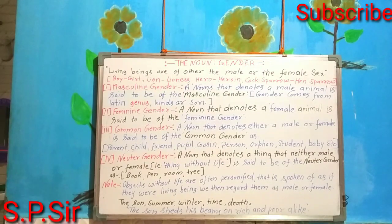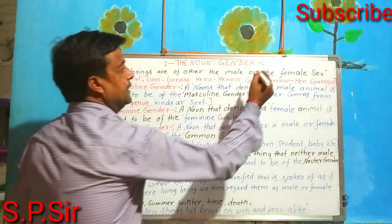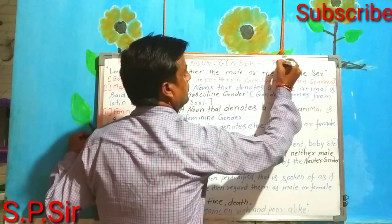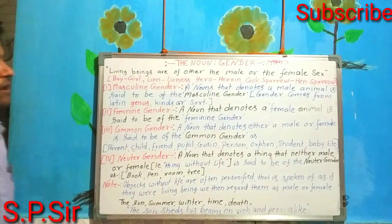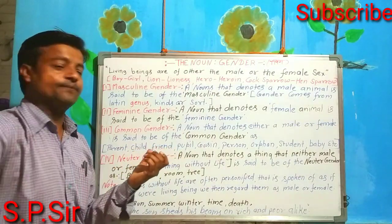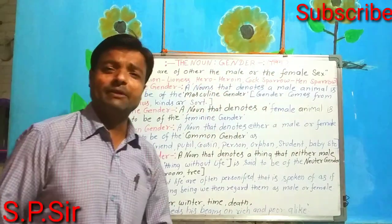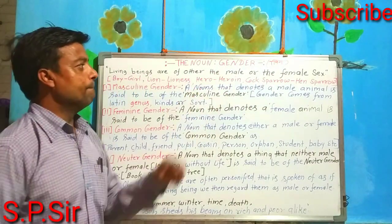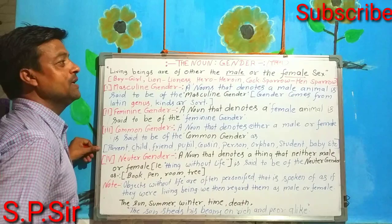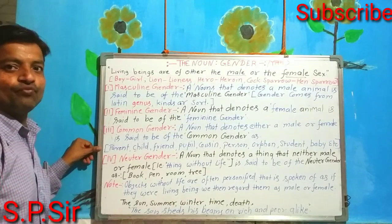Let's start. Gender — what is gender? The definition: gender denotes things of either the male or the female sex. That means male or female sex — this introduces gender. Gender can be male or female.